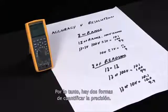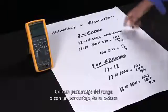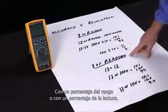So there's two ways we have accuracy specified: one is in percent of range and one is in percent of reading.